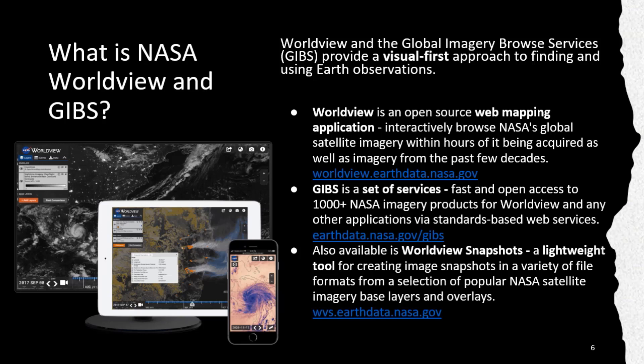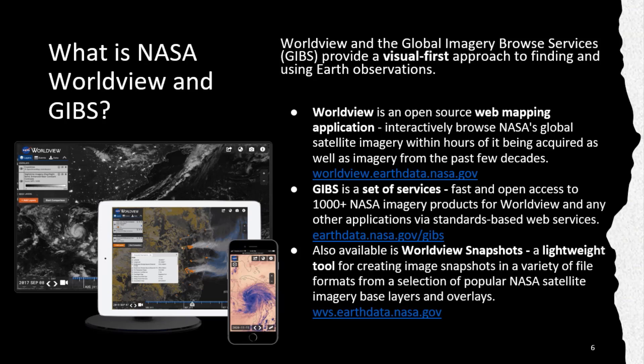There are three components: Worldview is the open-source web mapping application that enables you to interactively browse NASA's global satellite imagery within hours of it being acquired, as well as imagery from the past few decades. GIBBS is the set of services on the back end, providing fast and open access to over a thousand NASA imagery products for Worldview and other applications via standard-based web services. Also available is Worldview Snapshots — a lightweight tool for creating image snapshots in a variety of file formats from the most popular NASA satellite imagery base layers and overlays, specifically set up for users in low-bandwidth areas or users undertaking fieldwork without good internet access.